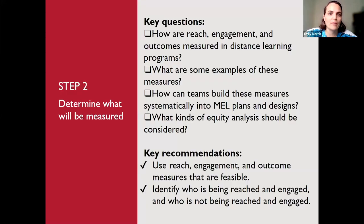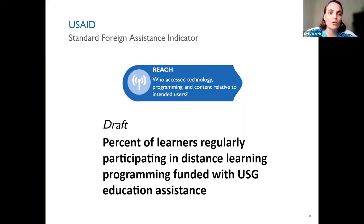The roadmap presents key questions: how will these be measured in the programs being implemented, what are some examples, how can teams build these measures systematically into MEL plans, and what equity analyses should be considered? The recommendation is to use all measures as feasible and identify from the onset who is and isn't being reached and engaged — ensuring equity from the start. For USAID-funded programs, a standard for assistance indicator is in draft, looking at reach and percent of learners regularly participating in distance learning programming.